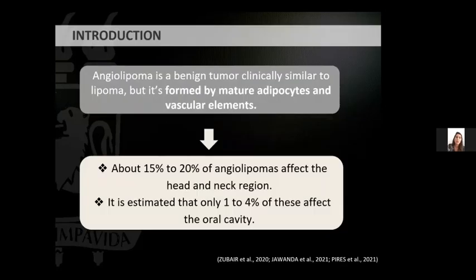Angiolipoma is a benign neoplasm clinically similar to lipoma, but its degree of vascularization is much greater when analyzing microscopically. It is formed by mature adipocytes and vascular elements. About 50% to 20% of angiolipomas affect the head and neck region, and it is estimated that only 1% to 4% of these affect the oral cavity.